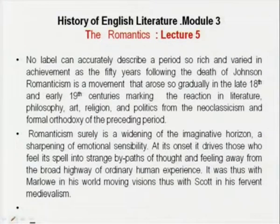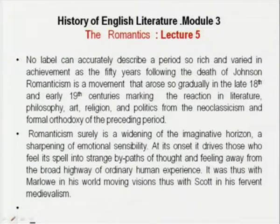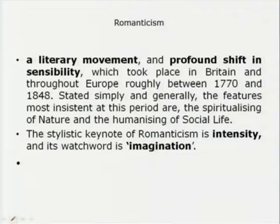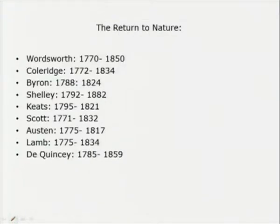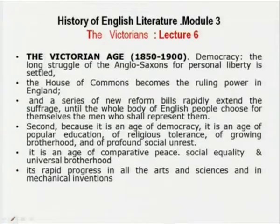In lecture 5, we did the Romantic age. No label can accurately describe a period which was so rich and abundant. It was surely a widening of the imaginative horizon, a sharpening of emotional sensibility. Horizons were untramelled — almost a take-off from the Renaissance, with a profound shift in sensibility, especially in its intensity and imagination. The great key poets were Wordsworth, Coleridge, Byron, Shelley, Keats, Scott, Austen, and prose writers Lamb and De Quincey.